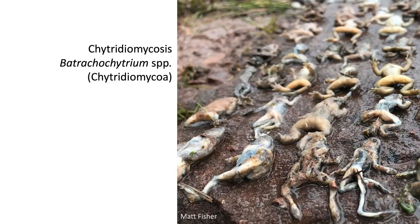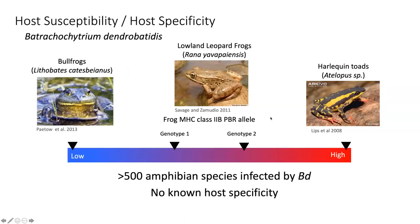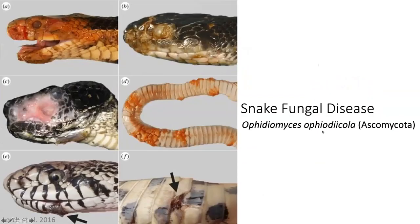Increased study of Bd has shown us that susceptibility varies greatly among amphibians, with some acting as carriers — like bullfrogs — and others experiencing major declines and extinctions even in pristine environments, like these harlequin toads of the neotropics. Even within a species, susceptibility can vary. For instance, lowland leopard frogs from Arizona show differential susceptibility depending on which MHC genotype they carry. With greater than 500 known amphibian species infected by Bd and counting, there is practically no demonstrated host specificity.